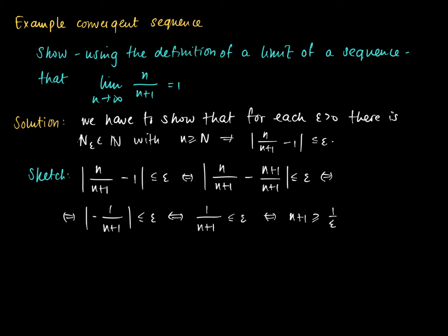Which means that n plus 1 should be larger or equal than 1 over epsilon. So n should be larger or equal than 1 over epsilon minus 1.